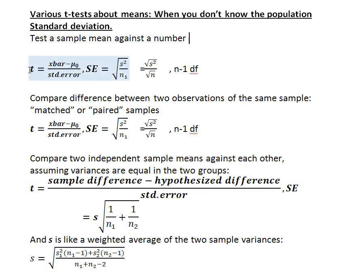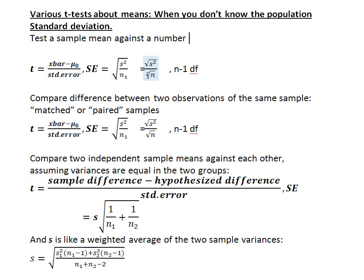The t-distribution was created to account for the uncertainty about the standard deviation calculated from a sample — it's just an estimate. We calculate a t-statistic: take the sample mean x̄, subtract the mean from our null hypothesis (the 100), and divide by a standard error. The standard error is calculated exactly the same way as when we knew the population standard deviation — it's the sample standard deviation divided by the square root of the sample size.